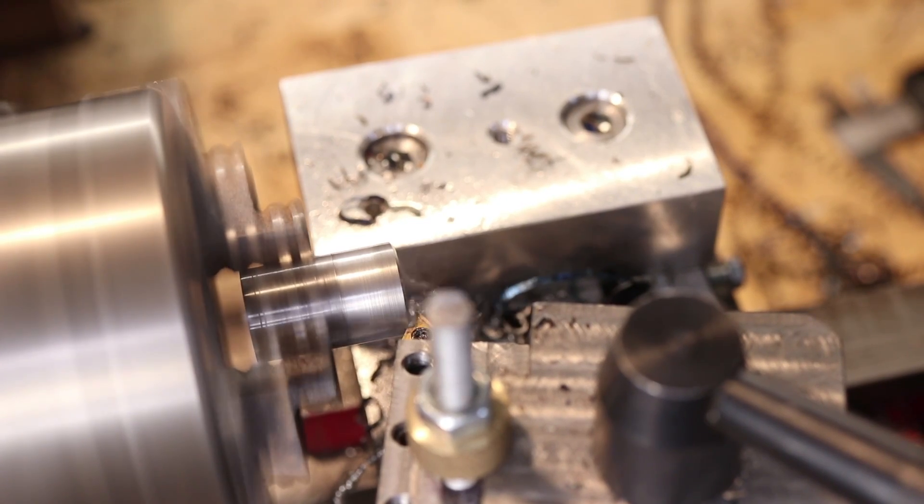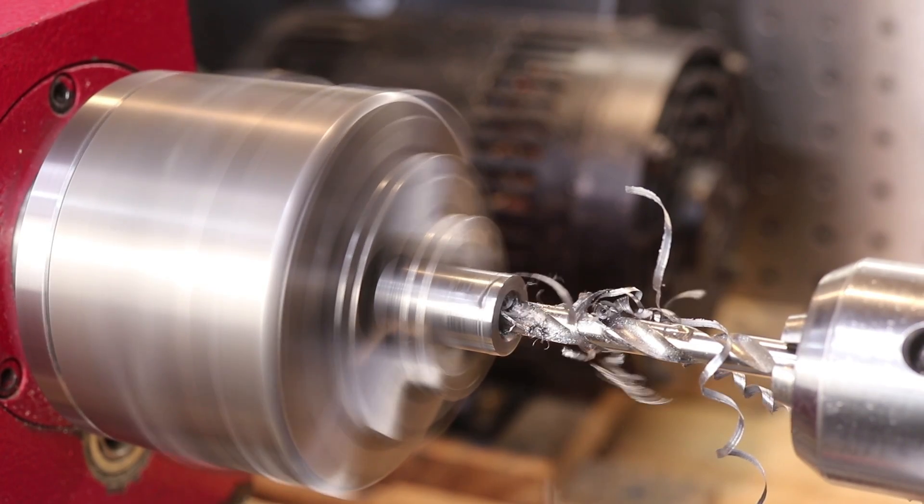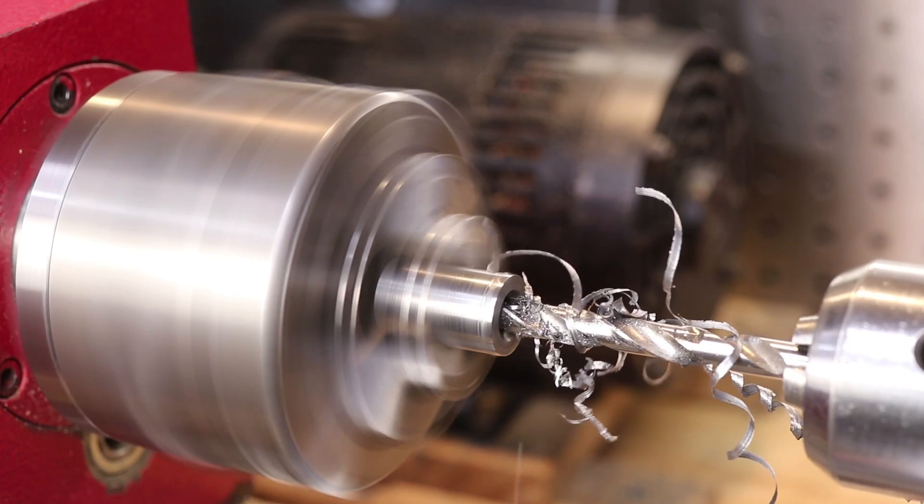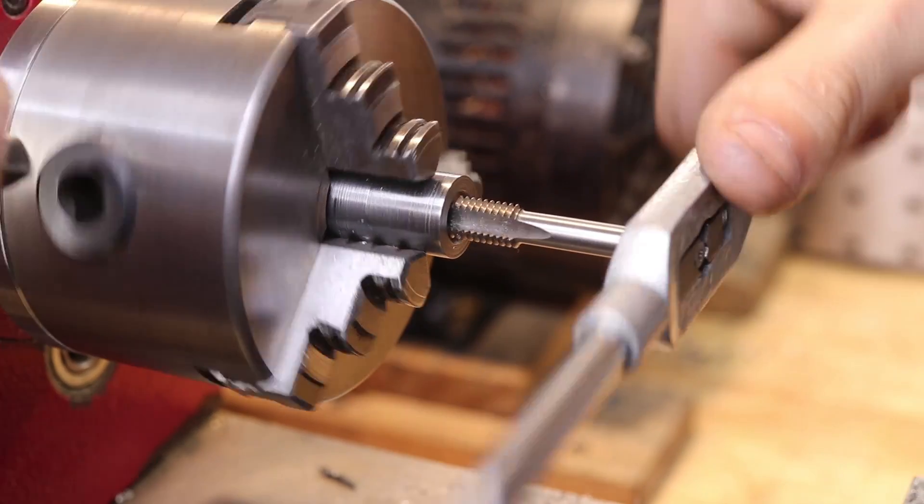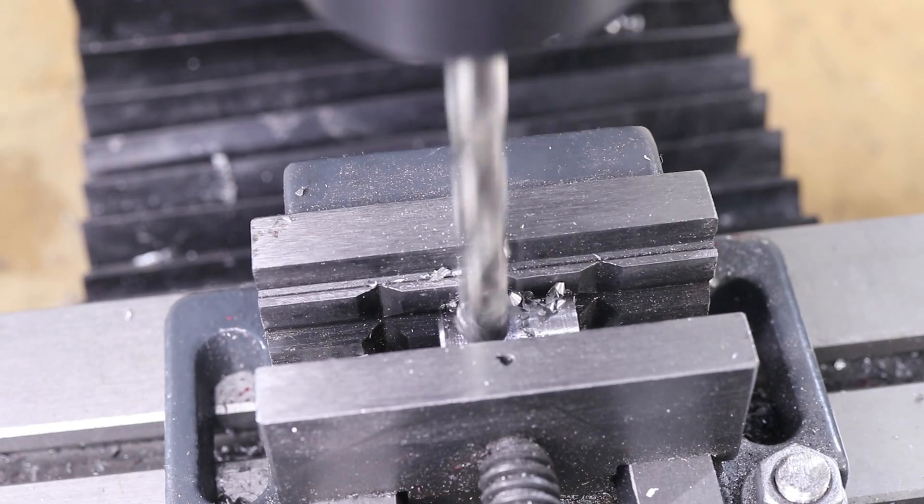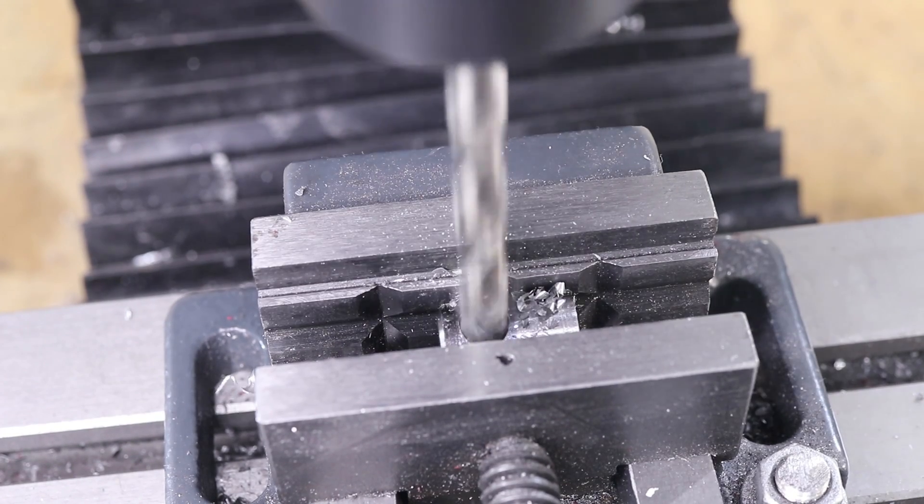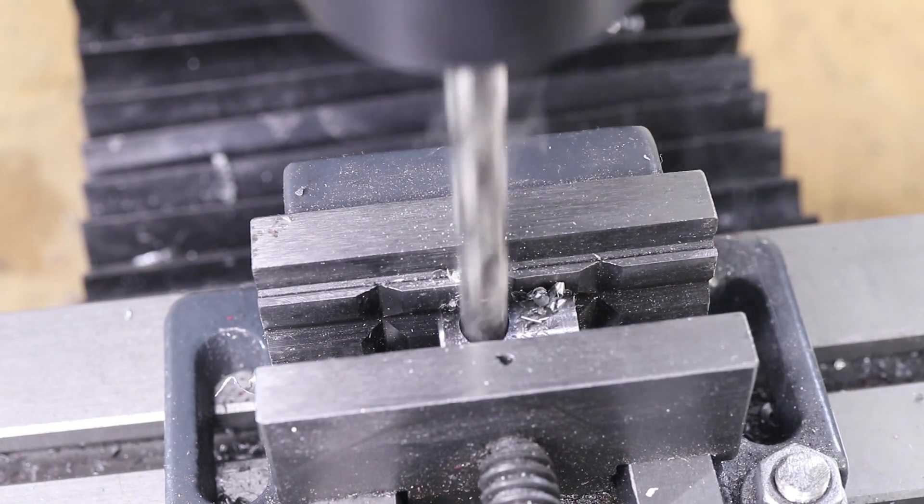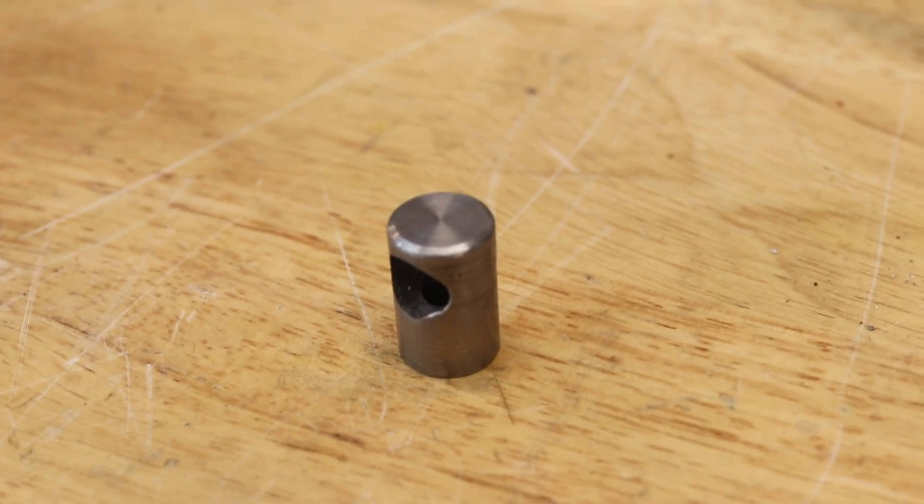A chamfer at the end prevents it from digging into the walls of the aluminum. The bottom was then drilled to accept an M8 thread. The part was then taken to the mill and an 11mm hole was drilled through it. And that's the first part complete.